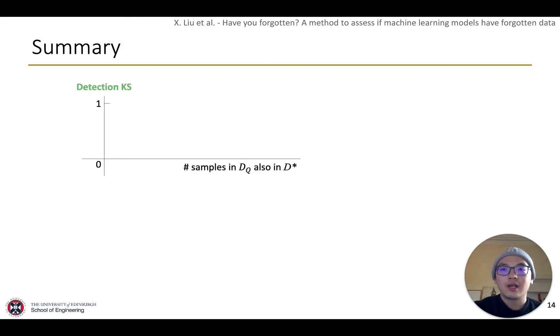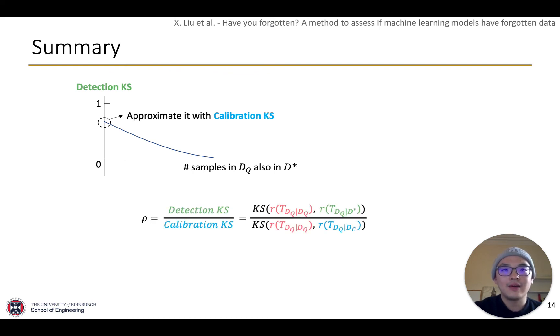To summarize, the detection KS will be smaller when most samples of DQ are in D star. And when no samples of DQ are in D star, the detection KS is uncertain. And depending on the overlap, we use the calibration KS to approximate this case. Then we can calculate a ratio rho by dividing detection KS with calibration KS. So, if detection KS is above the point, the target model has forgotten DQ. On the contrary, the target model has not forgotten DQ.